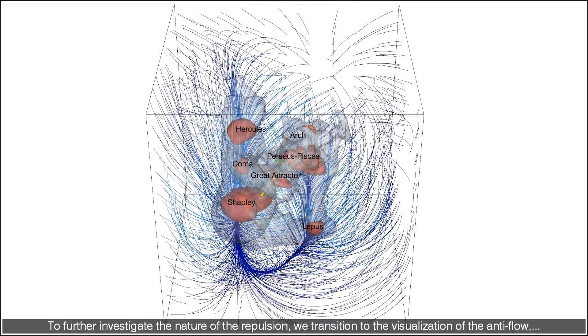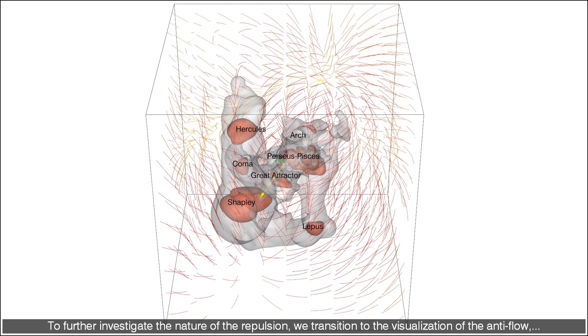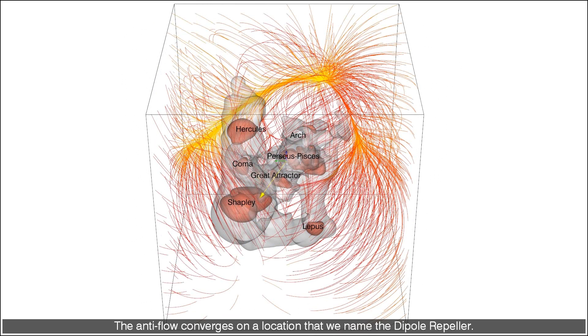To further investigate the nature of the repulsion, we transition to the visualization of the antiflow, namely the negative of the flow. The antiflow converges on a location that we name the dipole repeller.